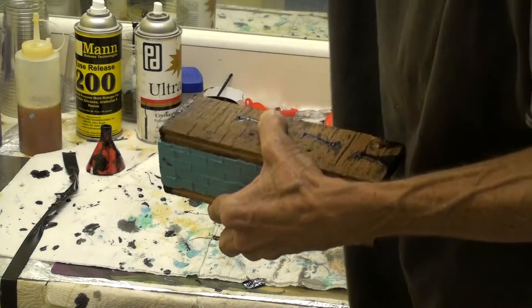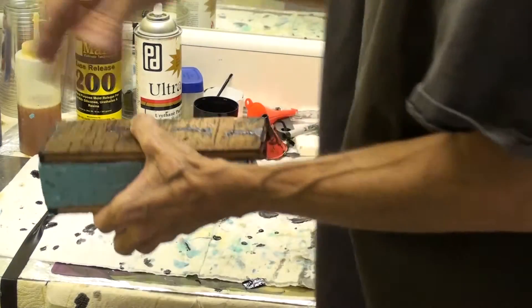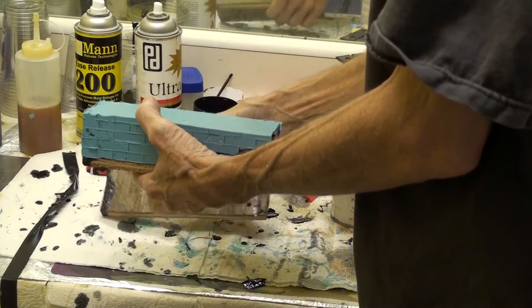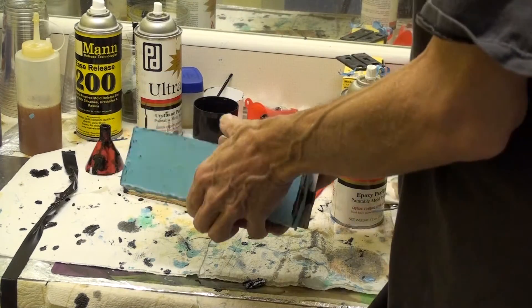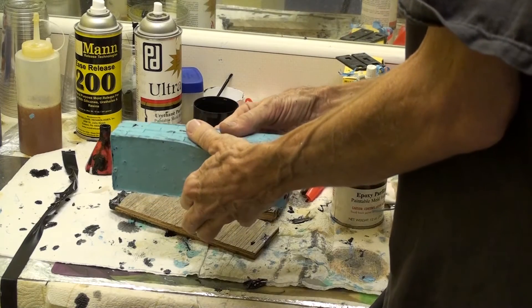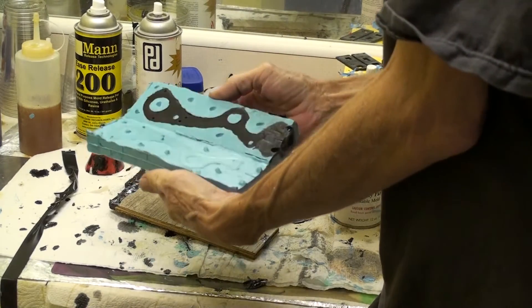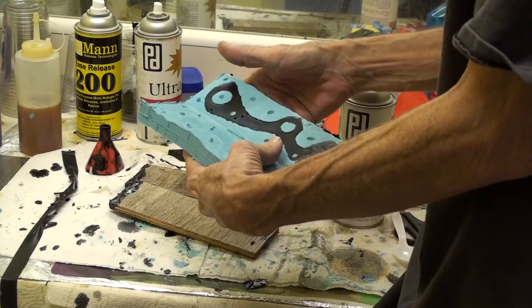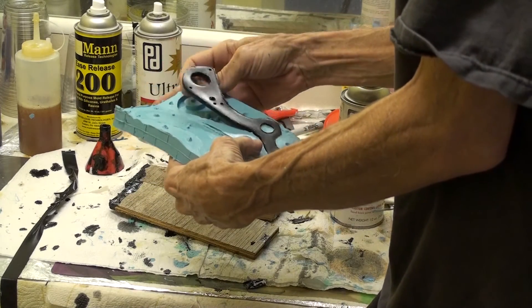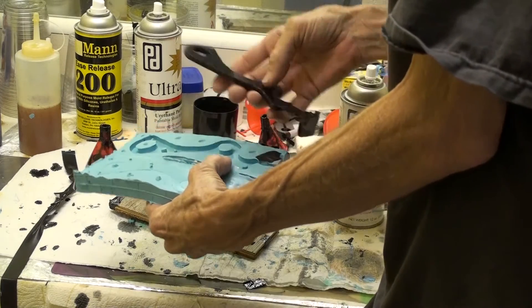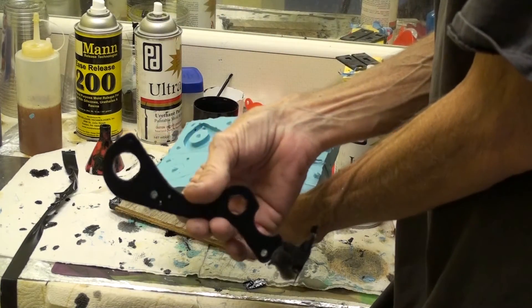After the resin is hardened in the mold, I take off the electrical tape. And when I separate the two halves of the mold, there should be a perfectly formed part inside. Notice how the glossy surface of the original has been captured by the mold and transferred to the cast part.